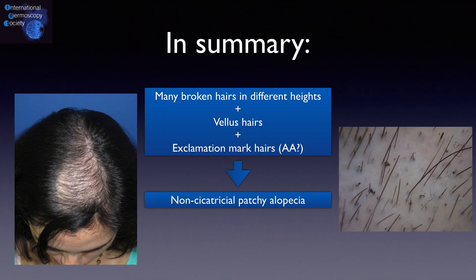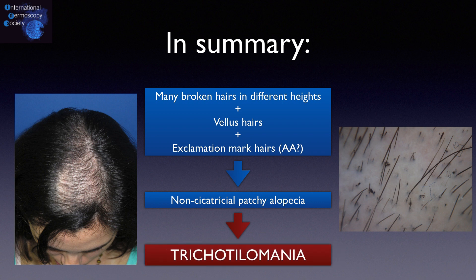When we have a chaotic trichoscopy showing many types of broken hairs in an asymmetric patch of alopecia, we need to think of trichotillomania. But in some cases, we also see some features of alopecia areata, such as exclamation mark hairs, and we need to take a biopsy in these areas to exclude it.